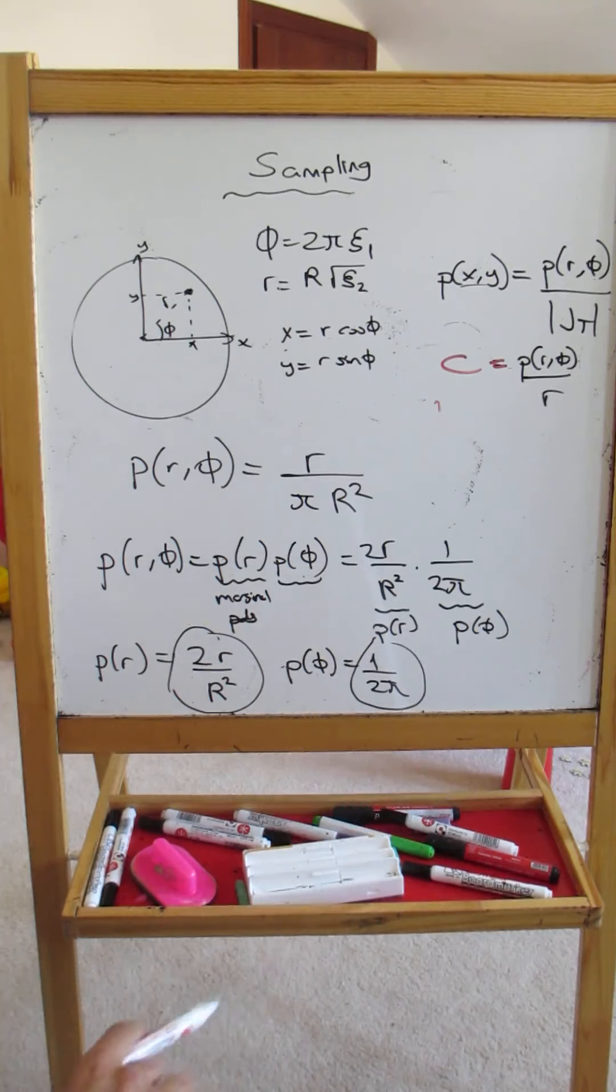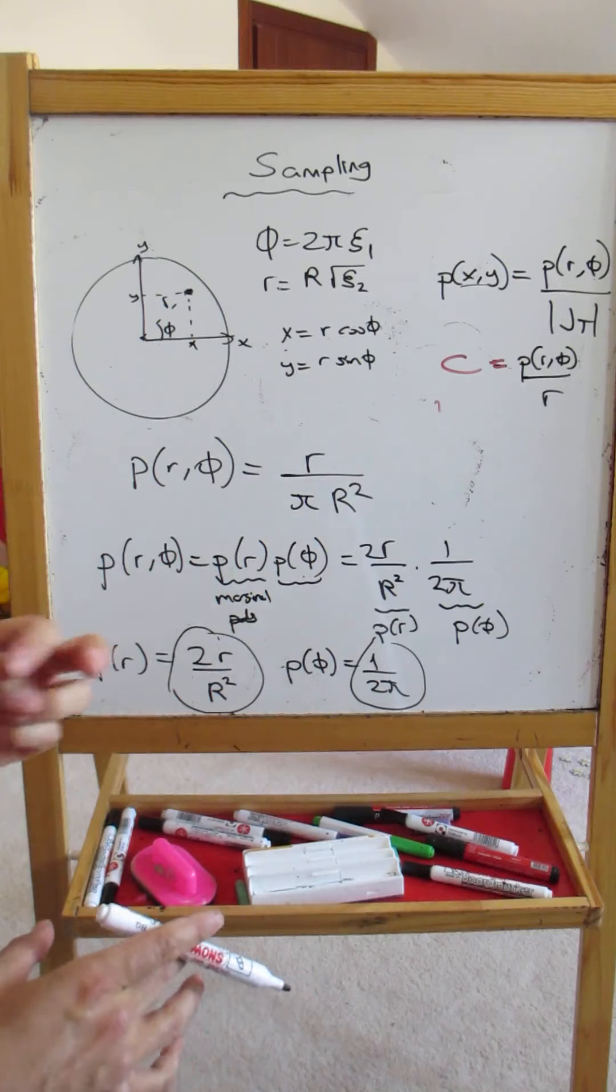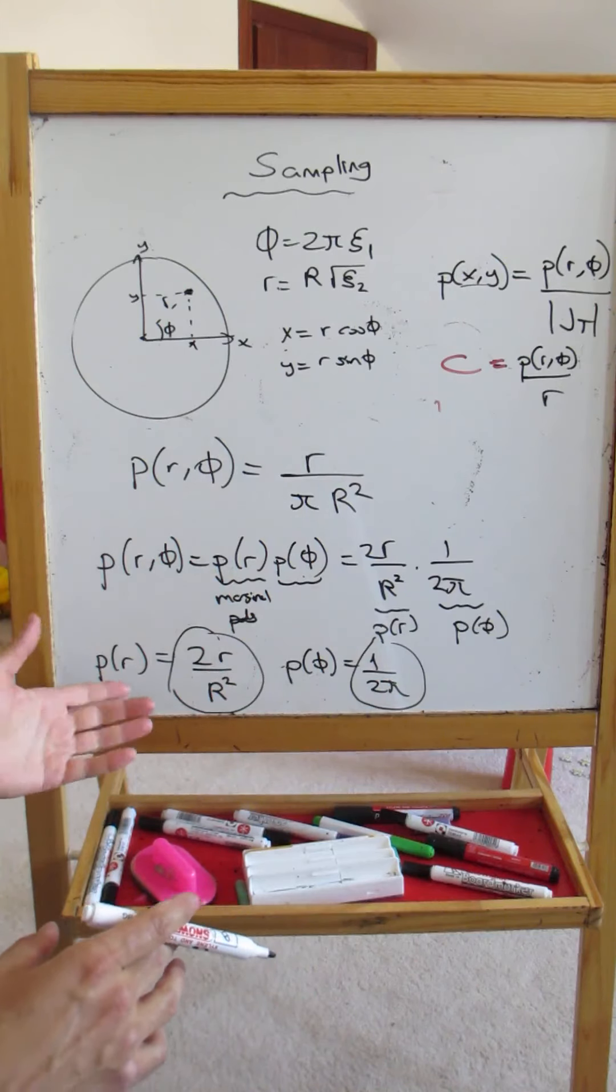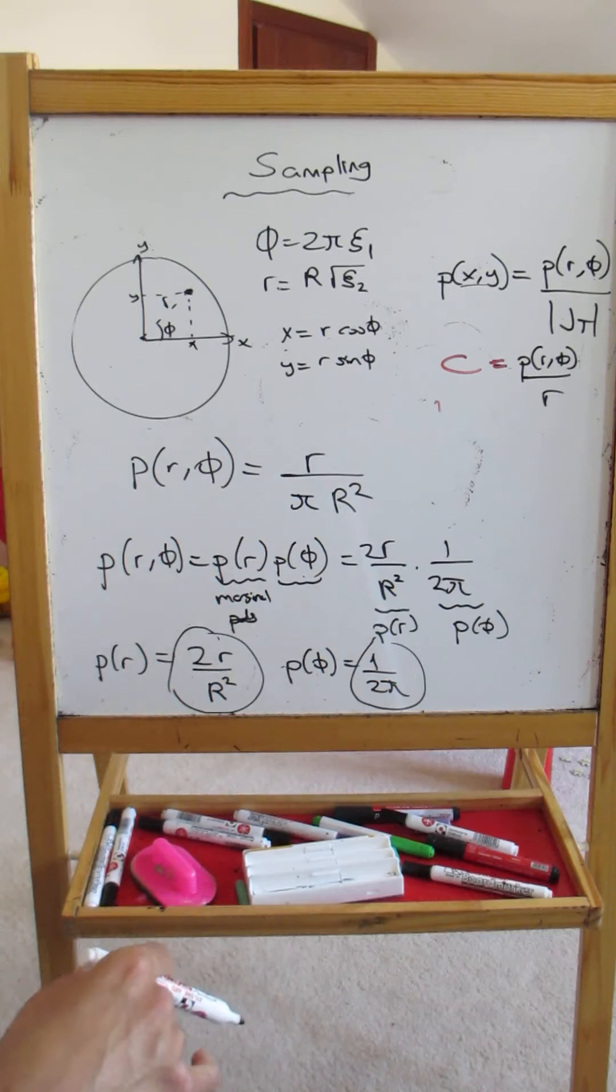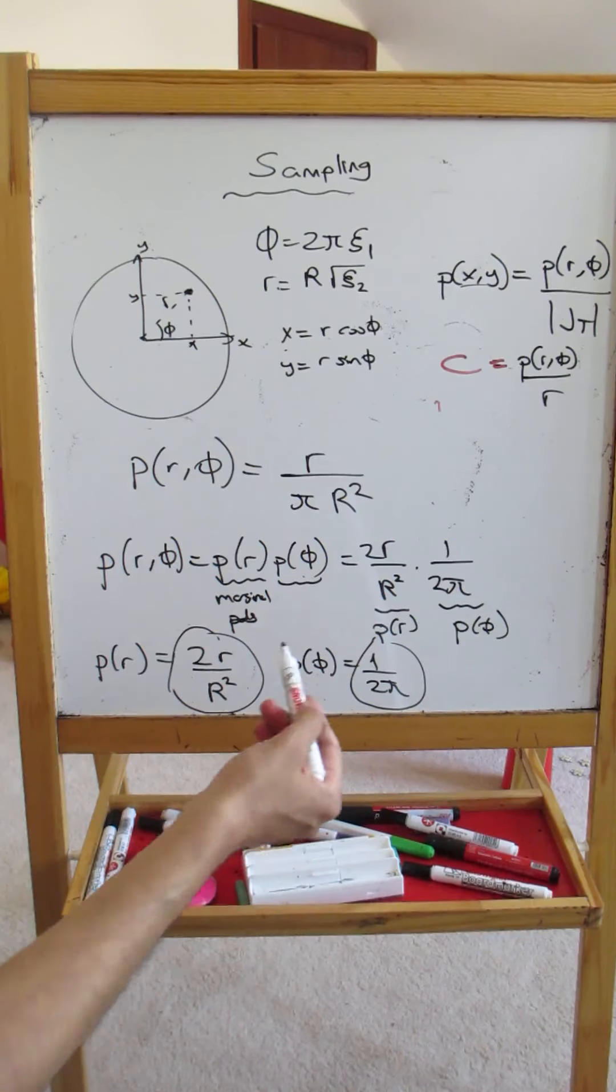Now once you reach this point, you know p(r) and p(phi), you can do this three-four step process: you compute the CDF, you invert the CDF, and you plug in your random numbers to get the sample values. And if you do that, which we have already done before, you will get this result.